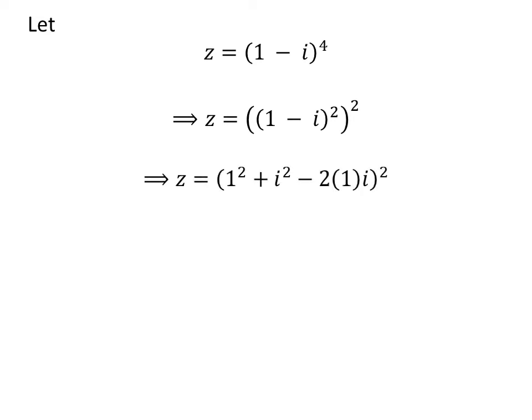The expansion of (1 - i)^2 is 1^2 + i^2 - 2(1)i. We know that i^2 = -1.